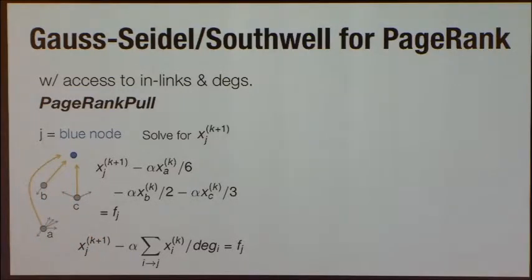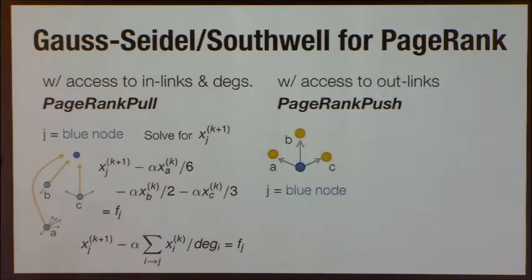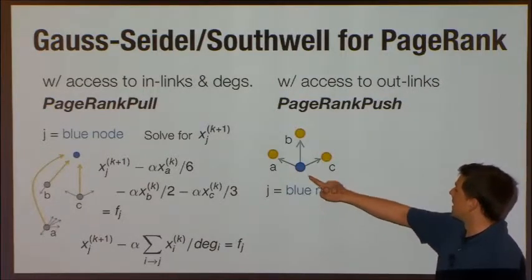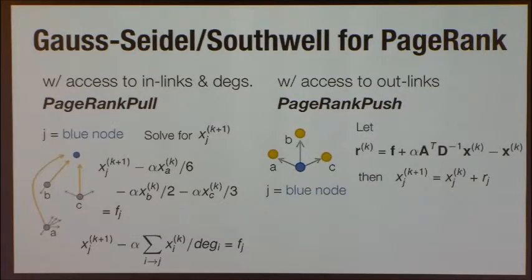This is what I call PageRank pull because what you're doing is you're looking at what your inlinks are telling you to do and you're pulling that information into yourself. This is actually a little bit annoying because you need access to the inlinks of a node. If you're a guy like Justin Bieber, you have about 30 million of these guys and it might be very expensive to update your inlinks. There's another version of this called PageRank push, which is where you invert this. What you do is we're going to look at the same equation now but where you have access to your outlinks instead.